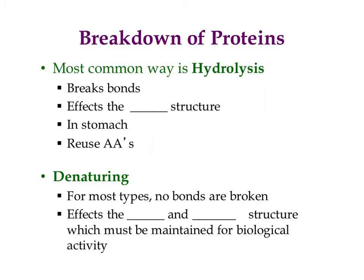The most common way that proteins are broken down in your body is hydrolysis. This is one of the organic reactions we learned earlier in this chapter. In hydrolysis, that's going to actually break bonds. So which structure would that affect? The choices are primary, secondary, tertiary, and quaternary. That's the primary structure, because it's the backbone and you're actually breaking it apart. It's covalent bonds that are holding it together, and that's what we're breaking in a hydrolysis reaction.